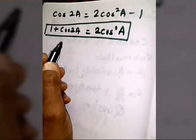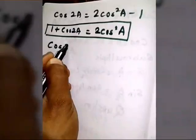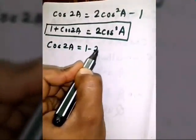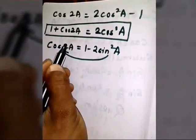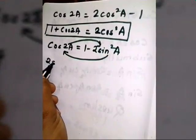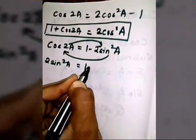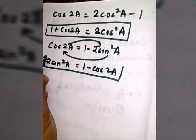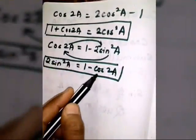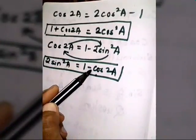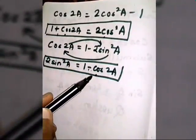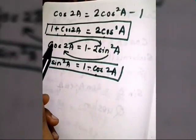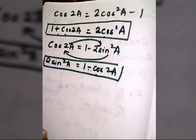Similarly, from cos 2A = 1 − 2sin²A, rearranging gives: 2sin²A = 1 − cos 2A. This is the next important form. Comparing the two forms, you can see only one difference: when there is a plus sign, it becomes cos², and when there is a minus sign, it becomes sin². So: 1 + cos 2A = 2cos²A, and 1 − cos 2A = 2sin²A. Please keep these forms in mind as they will be very helpful.